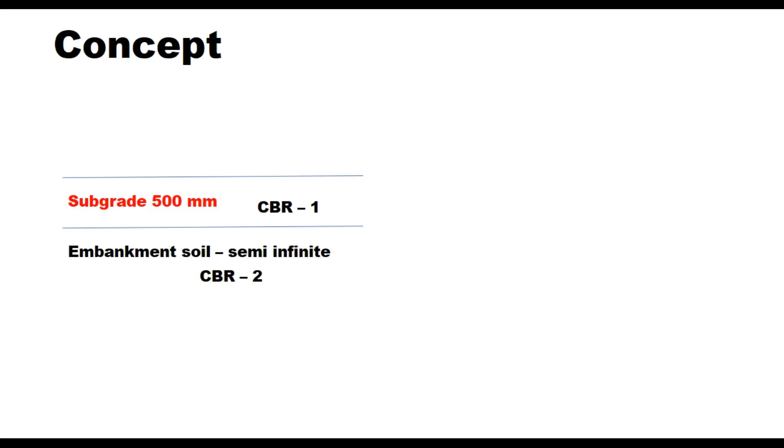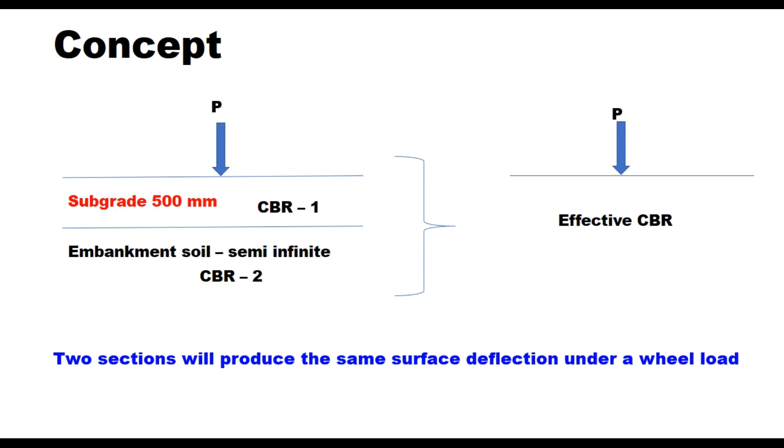Now the concept of effective CBR is like this: if there are two layers of soil having different CBR values, the top 500 mm we call subgrade with CBR value 1, and below that is your embankment soil which is semi-infinite in depth with CBR value 2. This is to be theoretically replaced by a single layer of soil which has some CBR that is called effective CBR. It means that the surface deflection when a load P is applied on the surface of this structure and surface of this structure, the surface deflection on two should be the same. Two sections will produce the same surface deflection under a real load and that is the concept of effective CBR.